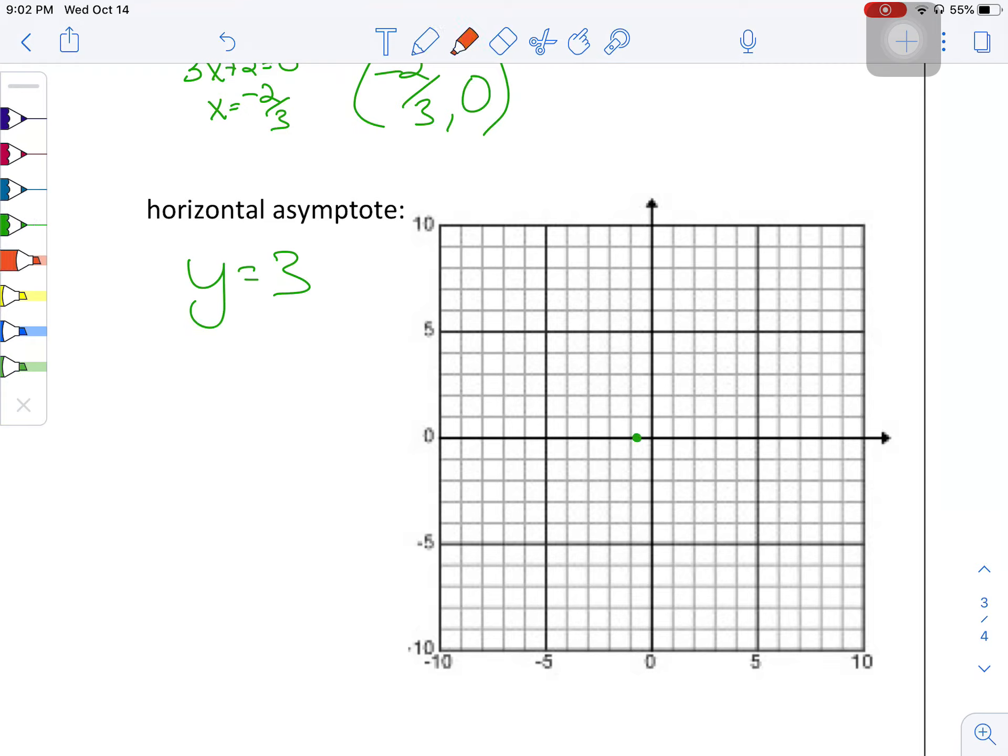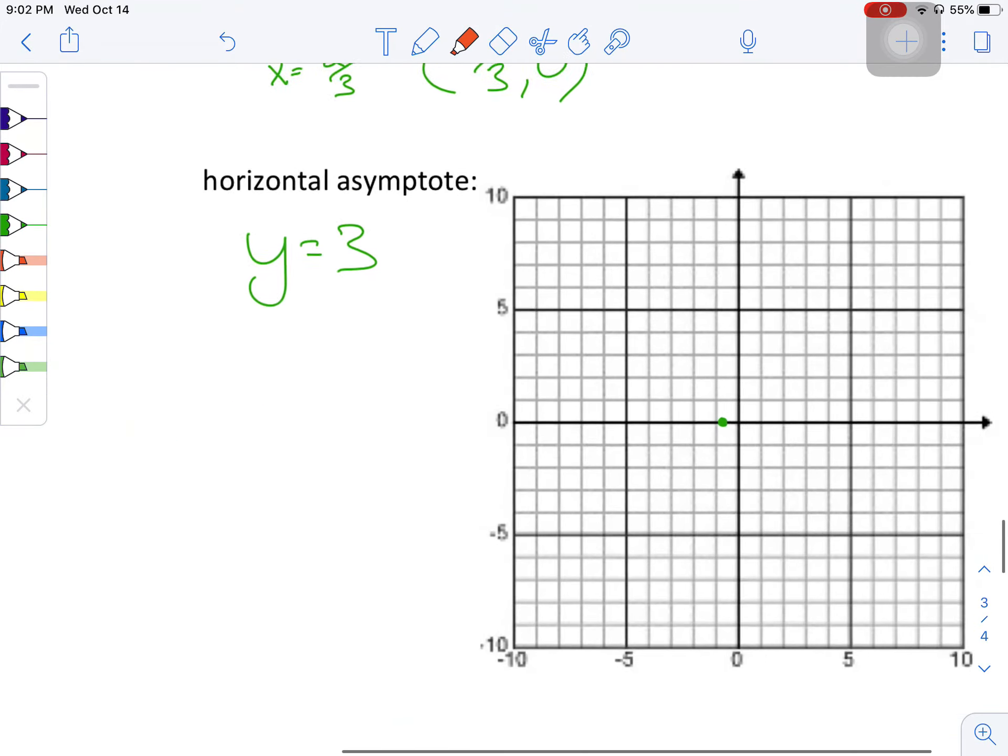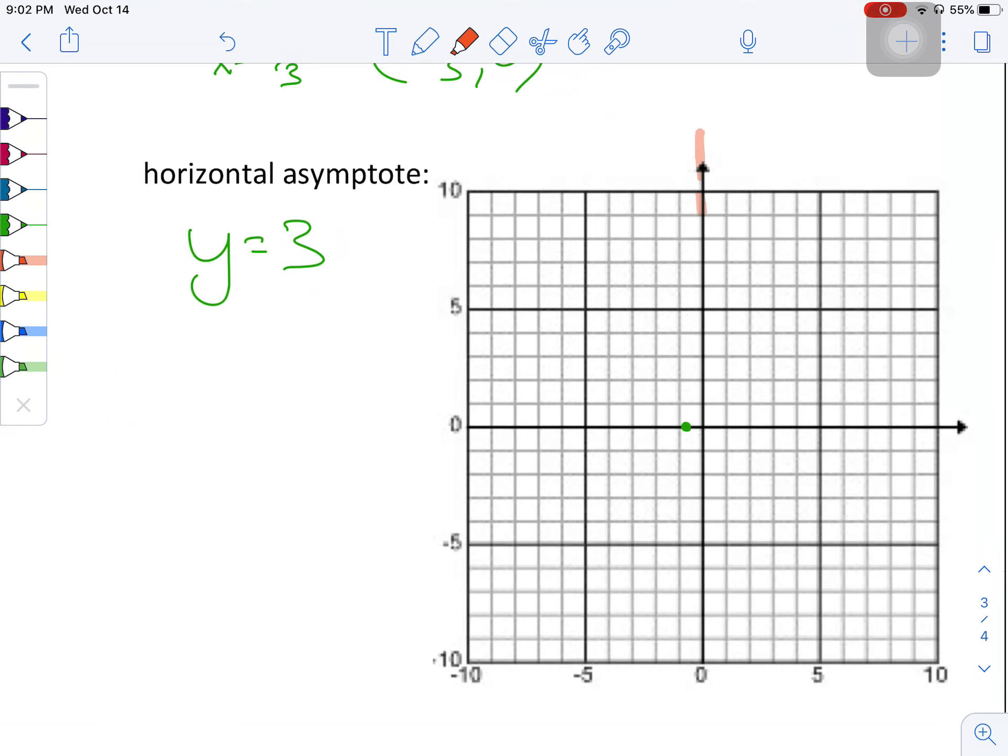All right. For my asymptotes, let's go ahead and get that in there. I had x equals zero and y equals three. All right. So x equals zero is the y axis. Y equals three. One, two, three here. Okay.